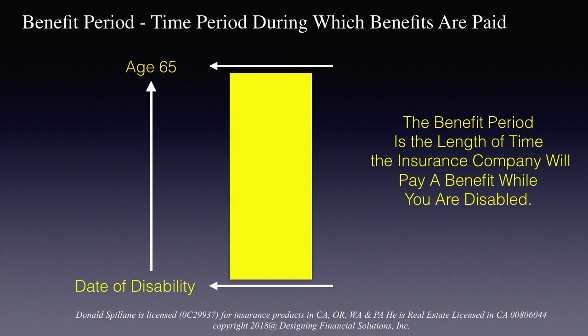As to the benefit period, this is the length of time the insurance company will pay a benefit while you're disabled — normally to age 65, but you must check your contract.